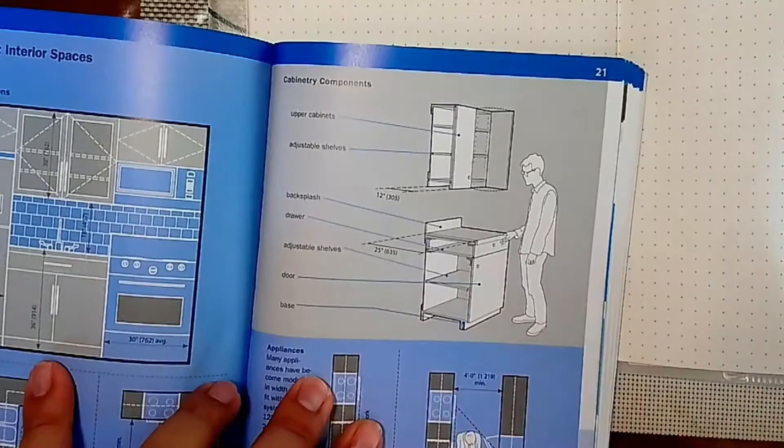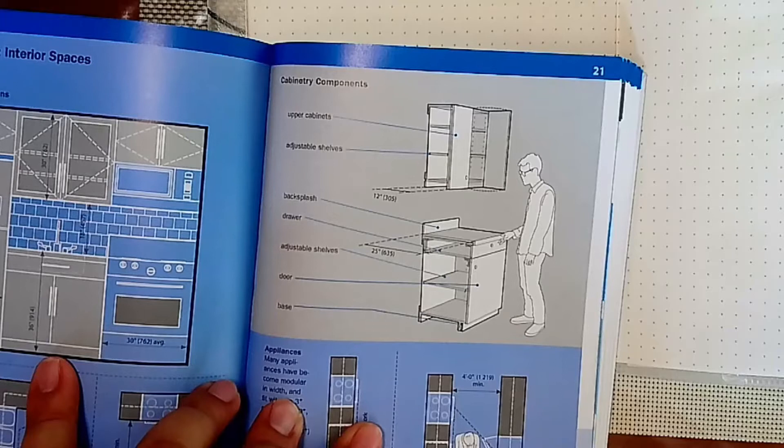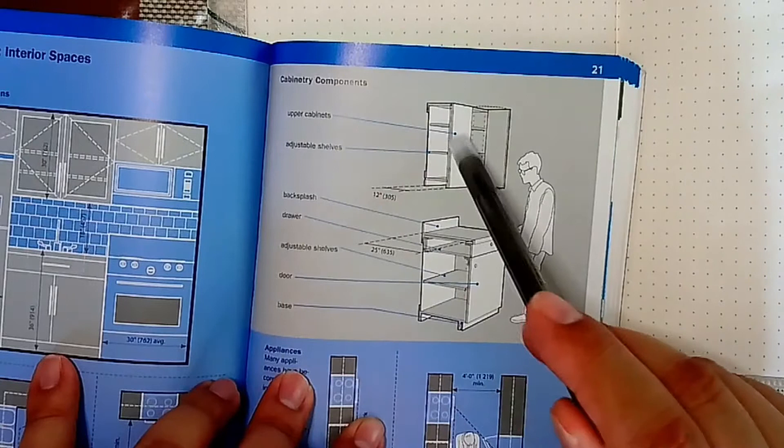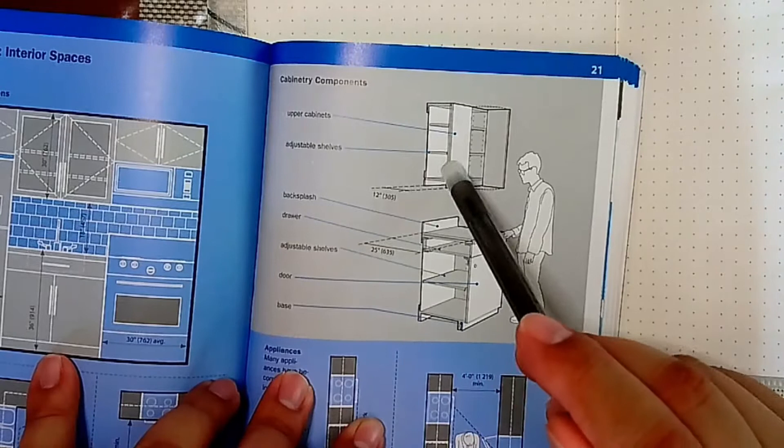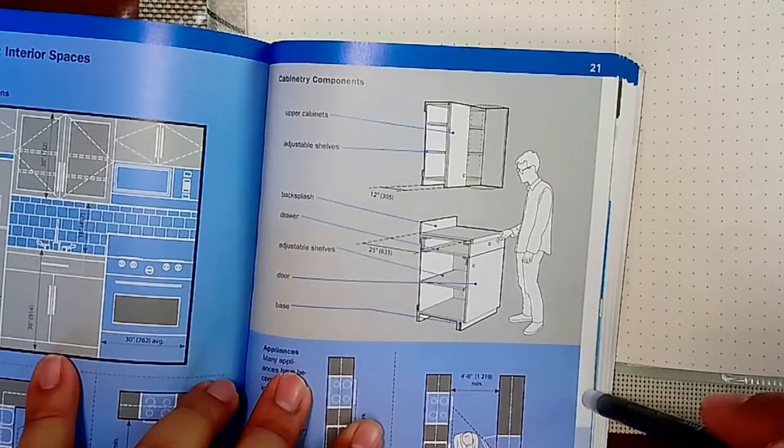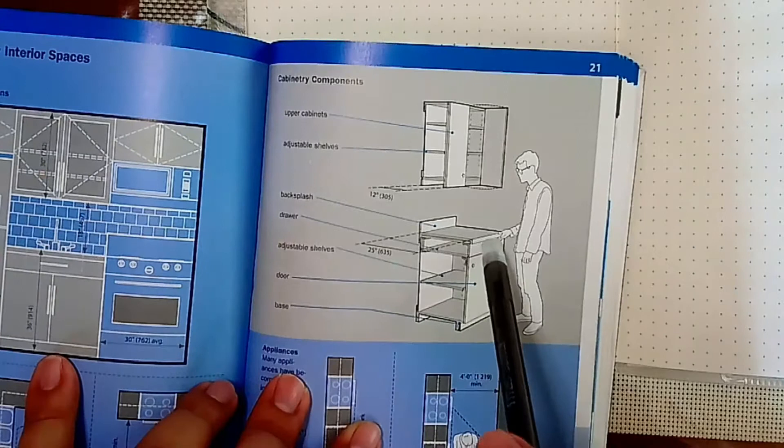Now you can find cabinetry components. When doing your kitchen, it's really important that you are very detail-oriented because there's a lot of anthropometric details in your kitchen. At the top you have your upper cabinets with adjustable shelves, so you can remove the shelf if you're going to place bigger groceries at the top. Then you have your backsplash.